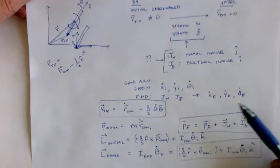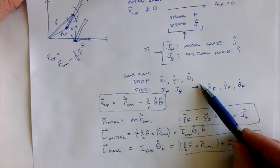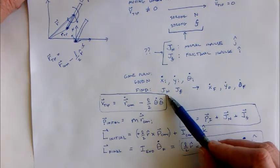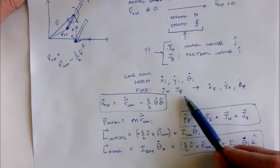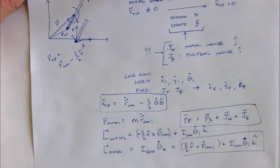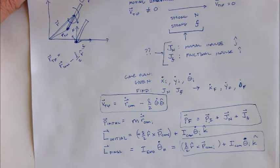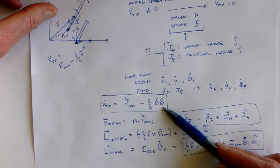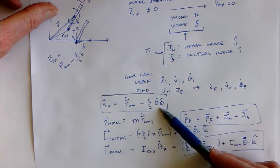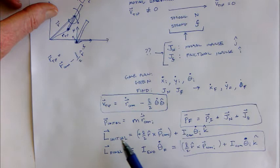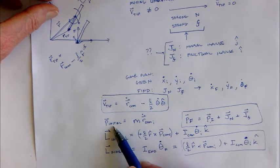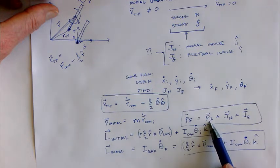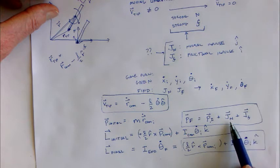Our game plan here was that, given the initial state variables and given the fact that these impulses happen, we apply conservation in order to first find out what the impulses are, and then eventually to figure out what the final state variables are so that we can proceed with actually simulating the system after this impact with the ground has happened. The final momentum is going to simply be the initial momentum plus the change in momentum due to the two impulses.